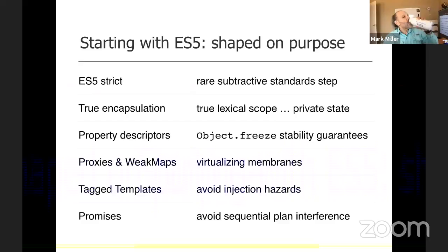Starting with the design of ECMAScript 5 — when I got involved it was the ECMAScript 3.1 revolt against ES4, which then became ES5. Starting with ES5, we have been consistently shaping ECMAScript to support the kind of security I'm explaining today — object capability security, both at coarse grain and fine grain. A lot of the elements we've gotten into ECMAScript to support our security goals, we got in by arguing for them largely on the basis of modularity goals. Once again corroborating our premise that security is just the extreme form of modularity, and to a large extent the same mechanisms help with both.